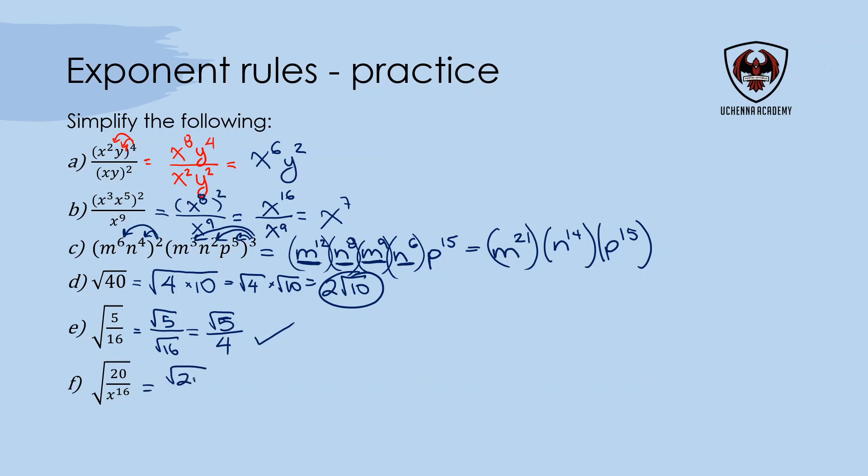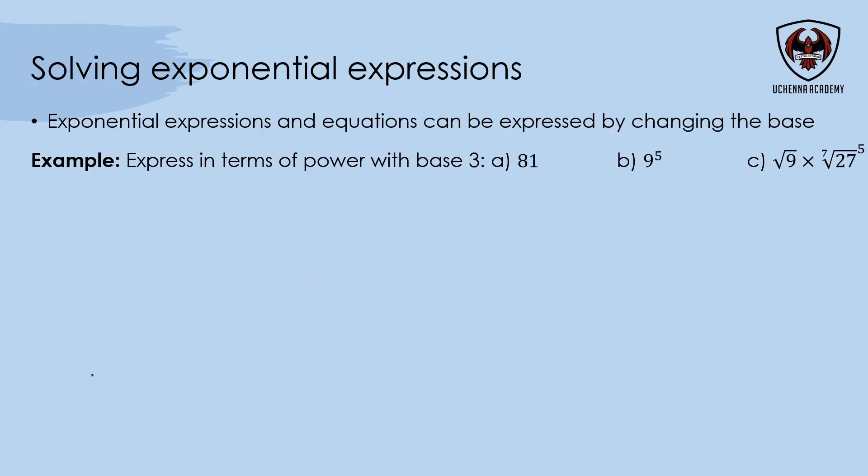Square root of 20 over x to the exponent 16: I'll split 20 as 4 times 5. x to the exponent 16 can be written with an exponent, so 16 over 2 because this is a square root. Square root of 4 is 2, so I have 2 root 5 in the numerator. 16 divided by 2 is 8, so the denominator is x to the exponent 8. This is my final answer—cleaner than what I was given at the beginning.